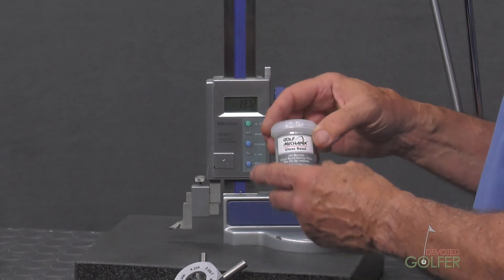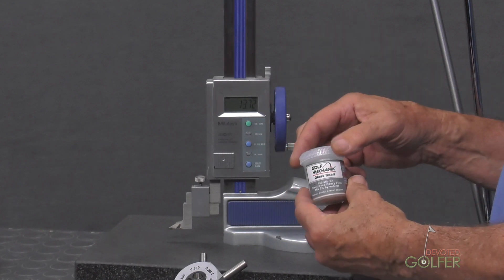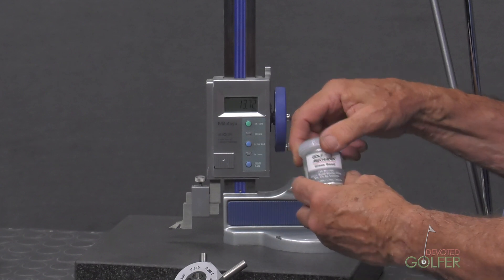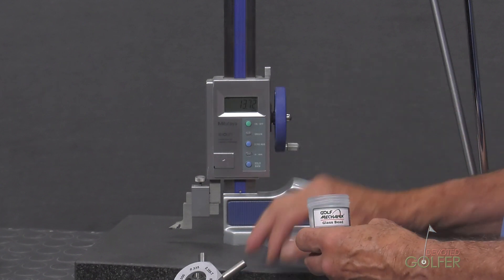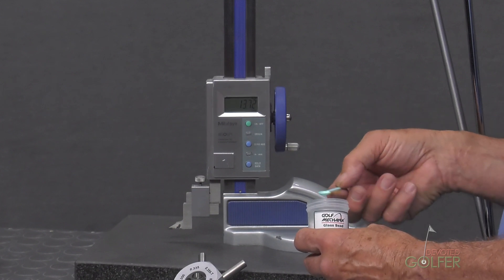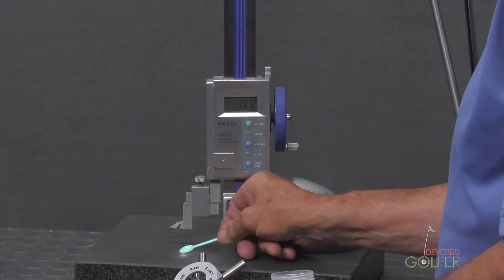This is the solution for making sure that you've got the proper gap between hosel and shaft. These are glass beads. You can buy beaded epoxy or you can take whatever epoxy you like and put some of this glass bead into the epoxy and then you mix it up.